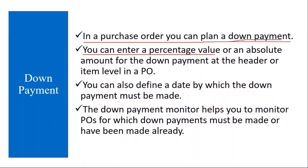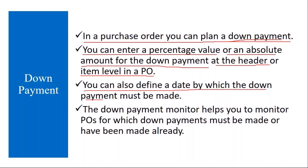You can enter a percentage value or an absolute amount for the down payment at the header or item level in a purchase order — I will show this in the system. You can also define a date by which the down payment must be made, so in the PO you can enter the date by which you have to make the down payment to the vendor.